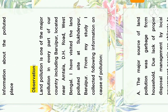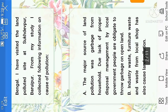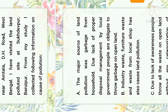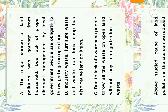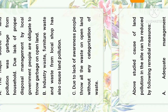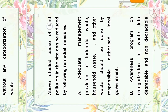Observation — what things were observed at that particular place: land pollution is one of the major forms of pollution in every part of our country, including Baruipur, located near Amtala BH Road, West Bengal. From my study at the land polluted site at Sukdebpur, Baruipur, the following information was collected. The major source of land pollution was garbage from households due to lack of proper disposal management by the local government. People are obliged to throw garbage on open land. Industrial waste, furniture waste, and waste from local shops have also caused land pollution here. Due to lack of awareness, people throw all waste on open land without any categorization of waste.